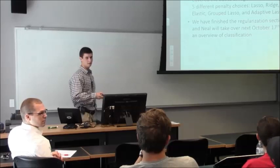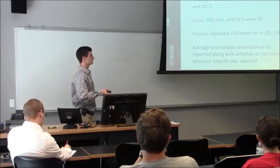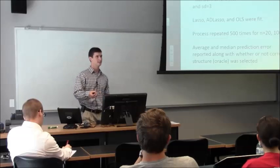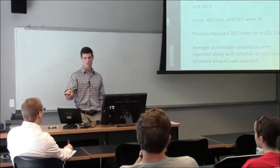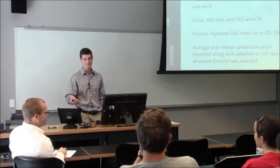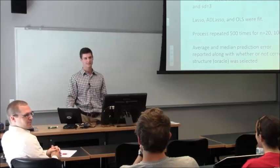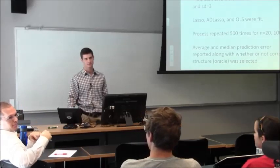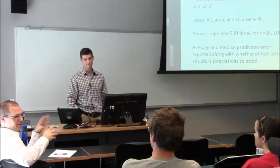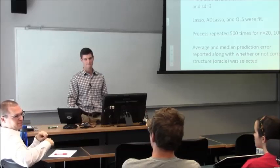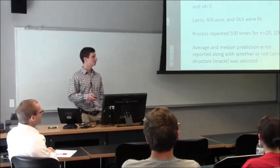Could you explain what the oracle column is saying? Yeah. It basically says, did it pick the correct predictors? The proportion of times it selected the right coefficients that were non-zero to be non-zero and then 0 to be 0 out of the 500 tables. Gotcha.